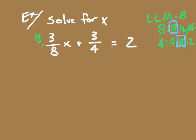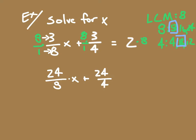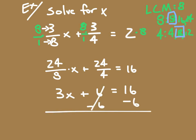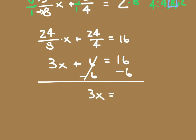I want to multiply everything by eight — each term. I'll put eight over one for each. Eight times three is 24 over one times eight, times x, plus 24 over one times four equals 16. Simplifying: 24 divided by eight is three, so I have 3x. Then 24 divided by four is six, equal to 16. Subtracting six from both sides gives 3x equals 10. Dividing both sides by three, x equals ten-thirds.